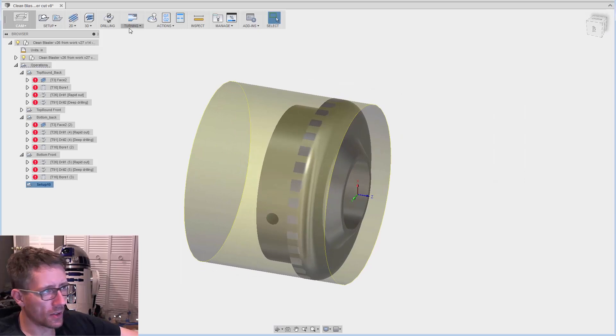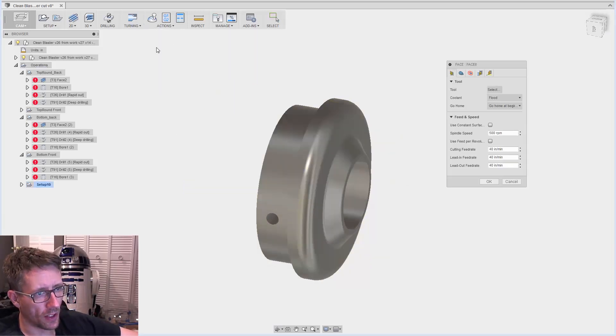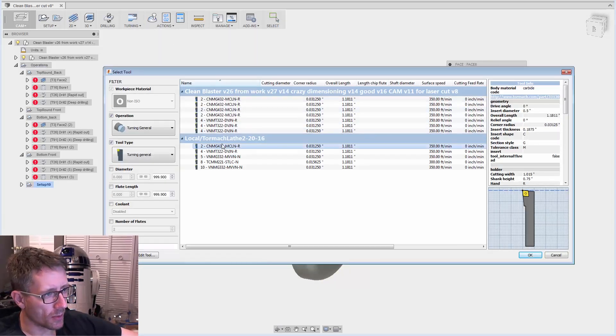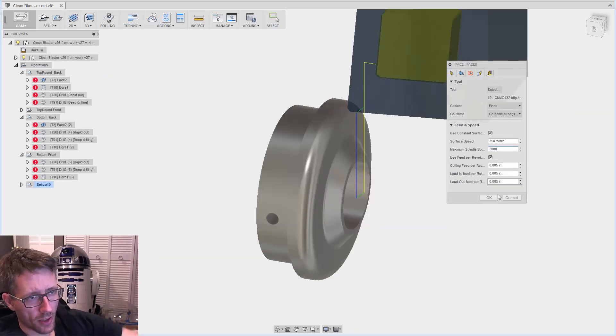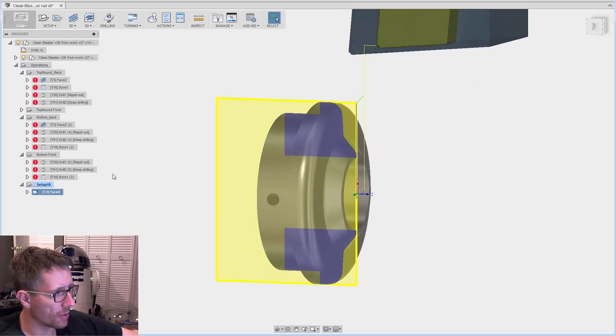First operation, just do a quick facing. Up here under turning, you can choose face. Select your tool - it's just this tool from Tormach I got. Max 2,000 RPM. I'm not really sure about feeds and speeds, so I'm just kind of guessing at this point.